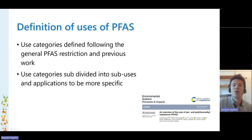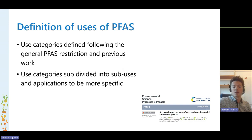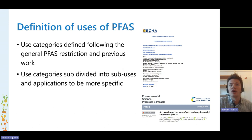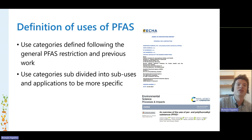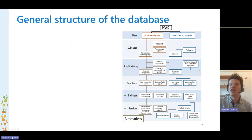That's what we tried to determine for all the uses of PFAS. We identified uses based on the general PFAS restriction being discussed at the European level under REACH, and on previous work like the database of uses of PFAS put together by Liana Gluge and colleagues in 2020. We have 18 use categories in the database at the moment, each subdivided into sub-uses and applications. For each application, we identify the technical functions provided by PFAS, its end-use, and the services. Then we can determine potential alternatives based on this information.